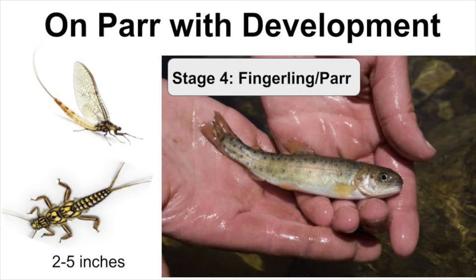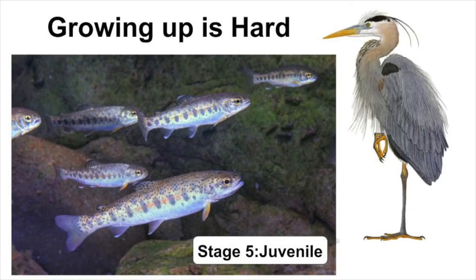When a fry grows to two to five inches, it becomes a fingerling. When it starts to develop large, dark markings, it then becomes a parr. At this stage, the trout like to eat a variety of macroinvertebrates, like mayfly and stonefly nymphs. Once a juvenile, a trout avoids predators, including wading birds and larger fish, by hiding in underwater roots and brush.